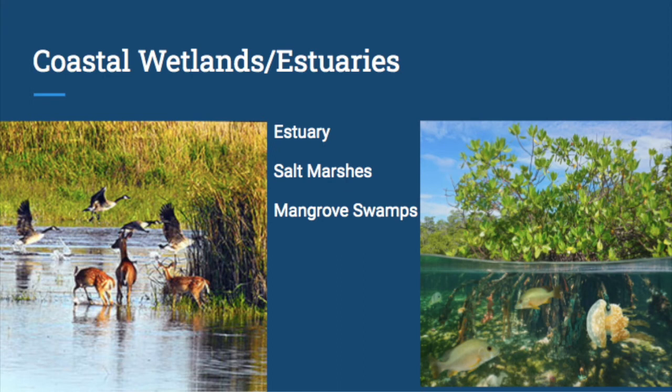Mangrove swamps feature mangroves — a type of tree that grows in salt water with roots growing under water and the trunk above water. The roots create a tangled system that is a really protective space, so organisms find shelter there. Lots of fish can lay young and survive there from predators, creating a really abundant ecosystem. Mangroves are also very threatened and have been cleared in many places, leading to a significant loss in biodiversity.